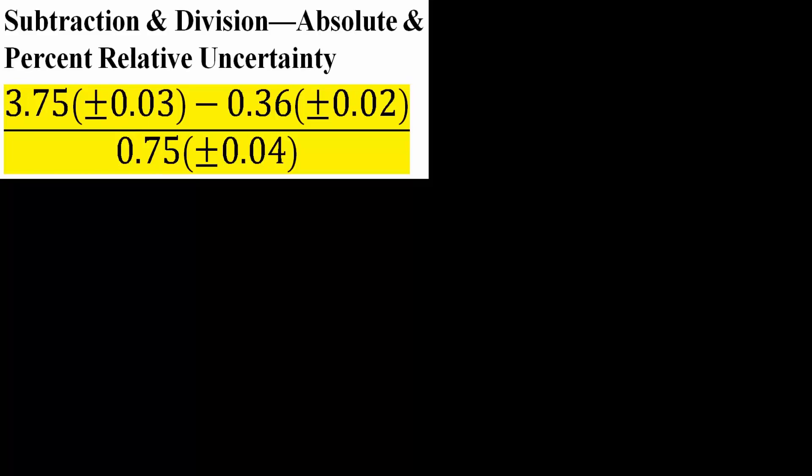In this video we will be finding the absolute and percent relative uncertainty for a problem that has subtraction and division. In the last two videos we did one with exclusively addition and subtraction and the other one was exclusively multiplication and division. Now in this case we have a mix between subtraction and division, and the way to get the percent and absolute uncertainty is a bit different.